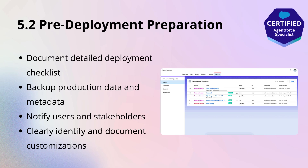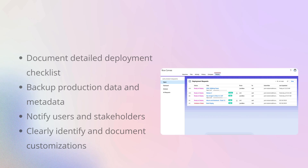This could include custom objects, workflows, page layouts, automation rules, and more. It's vital to create a deployment checklist, clearly identifying what will be moved, backing up critical data and metadata from your production environment, and communicating the plan and changes clearly to all stakeholders involved.